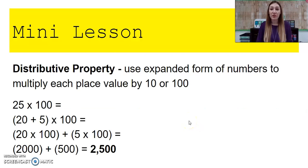First, we're going to look at the distributive property. This is when we use expanded form of numbers to multiply each place value by 10 or 100. For example, if I multiply 25 by 100, I would break apart that 25 into 20, I have two 10s, and five, five 1s.